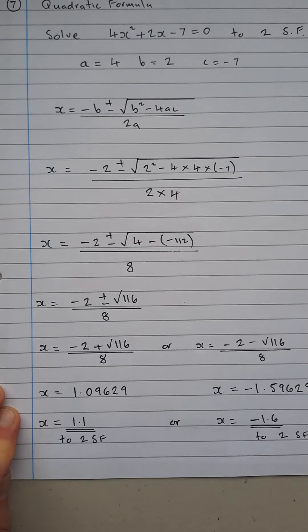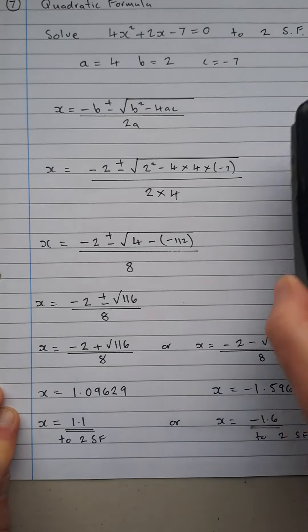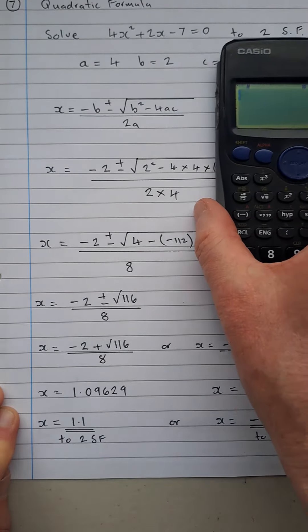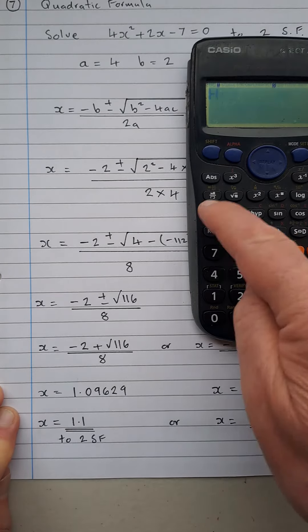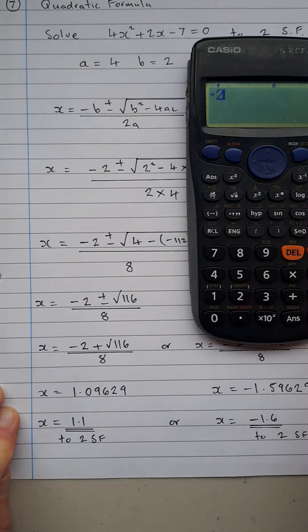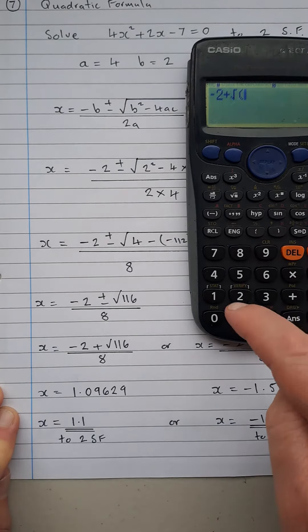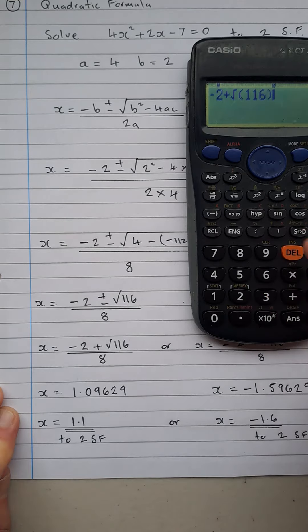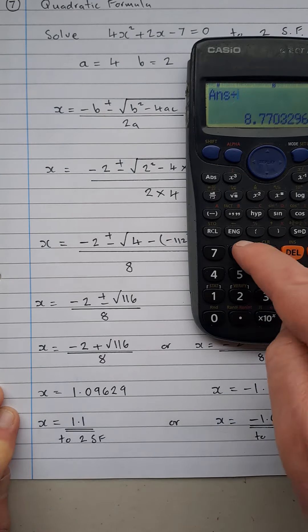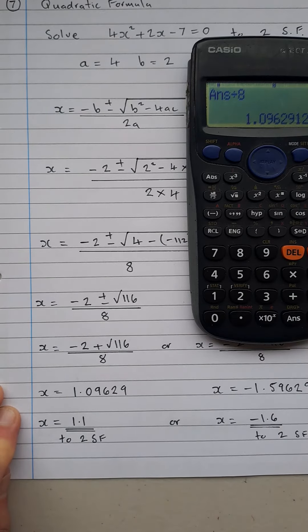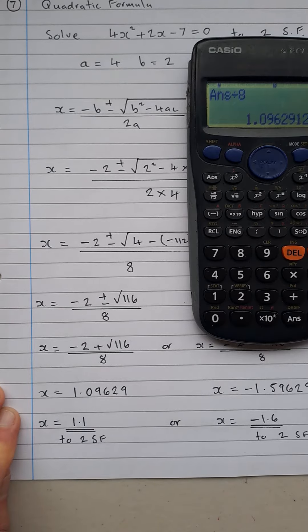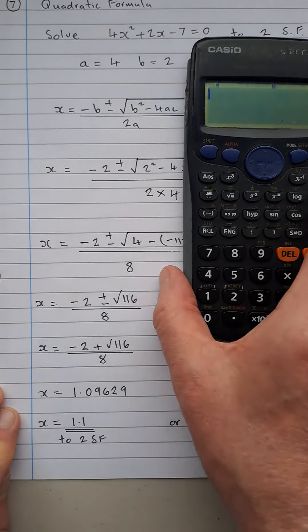So if I'm doing this on the calculator, I tend to try and be a little bit careful here. So let's do the first one, minus 2 plus root 116 equals, divide your answer by 8 and you get the 1.09629 that you can see there. And for the second one,